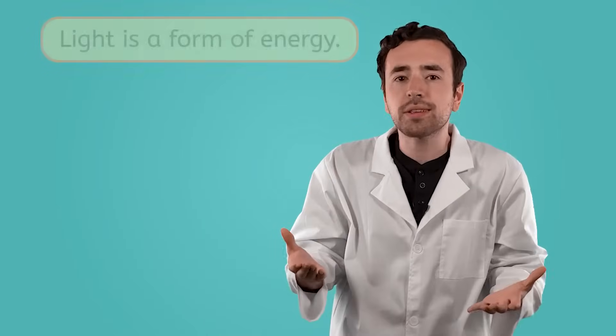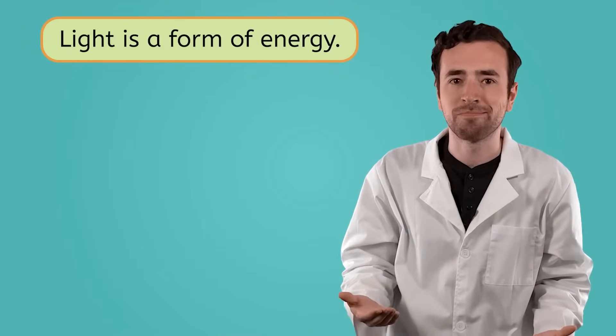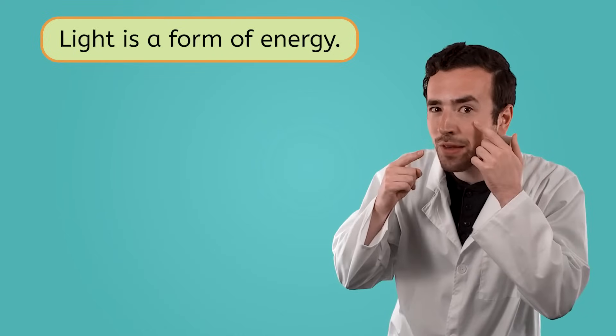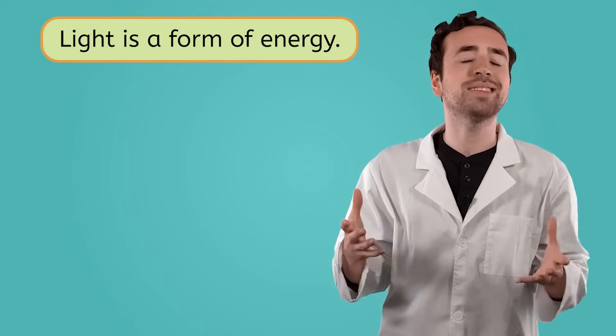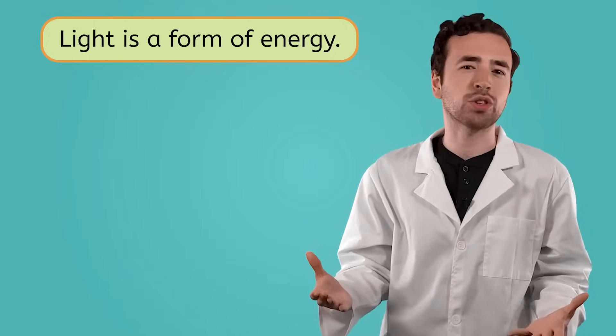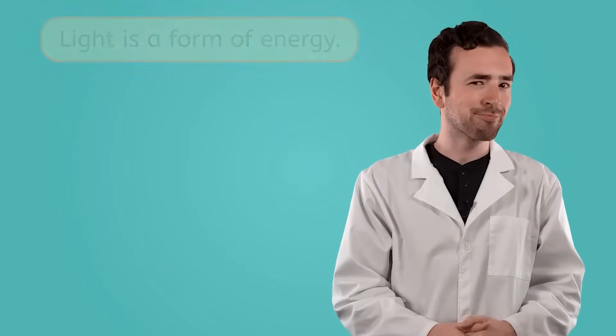Sorry, my eyes are still recovering from all those lights. Anyway, light is a form of energy. In fact, it's the only form of energy that can be seen with our eyes. Light can come from many different sources. What do you think the biggest source of light in our solar system is? That's right, the sun! The sun provides us with the light we use to see our world.